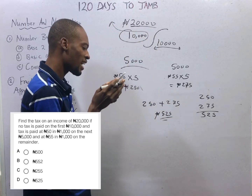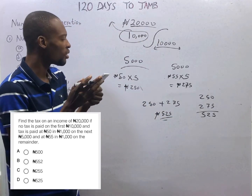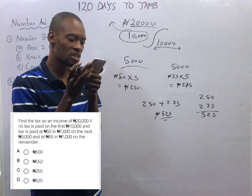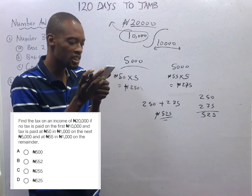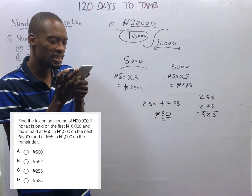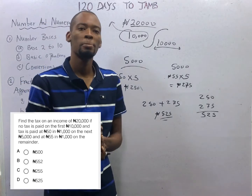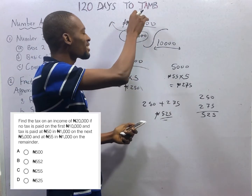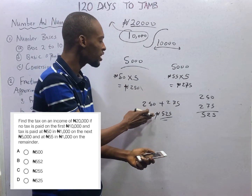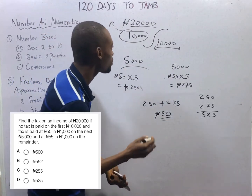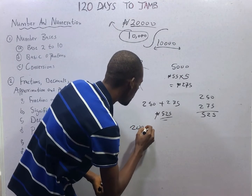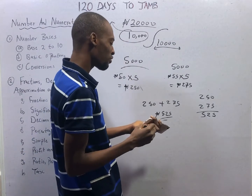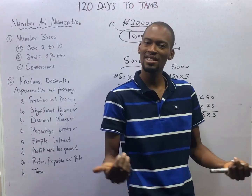This is the total tax paid on the income. The question asks: find the tax on an income — so that is it. 525 Naira is the total tax paid on the income. Ladies and gentlemen, the person is getting 20,000 Naira and is paying tax of 525 Naira. The money remaining for him to spend will simply be 20,000 Naira minus 525, because they can ask you that type of question — how much will he be left with?